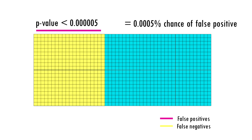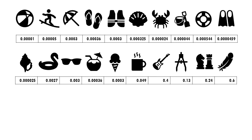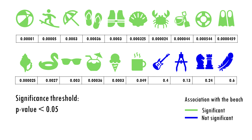Okay, time for another example. To make it easier to visualize, let's not talk about genes, but going to the beach. We test 20 different objects to see if they are associated with the beach, and these are our p-values. So if we set a p-value threshold of 0.05, it means 15 objects were significantly linked with the beach, and 5 of them were not. Some objects,